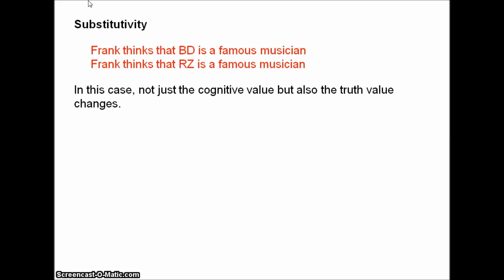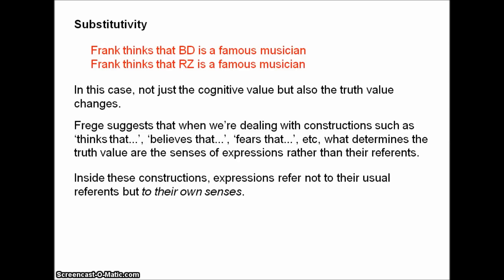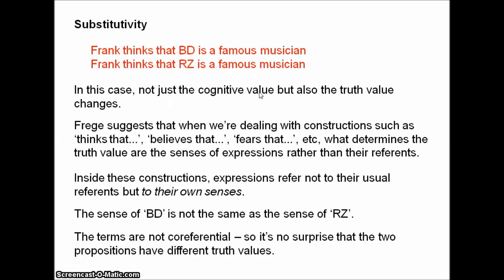The problem of substitutivity is rather more difficult, because in this case not just the cognitive value but also the truth value changes. Frege has a solution, though. He suggests that when we're dealing with constructions such as 'thinks that,' 'believes that,' 'fears that,' 'hopes that,' 'desires that,' and so on — these are called propositional attitudes — what determines the truth value of the expressions are the senses rather than their reference. So inside these constructions, expressions refer not to their usual reference but to their own senses. Thus 'Bob Dylan' refers not to the man Bob Dylan but to its own sense, and obviously the sense of Bob Dylan is not the same as the sense of Robert Zimmerman. So our terms are not co-referential, and therefore it's no surprise that the propositions have different truth values.